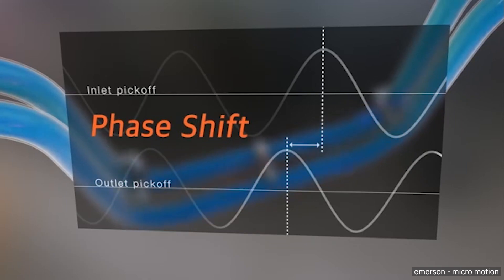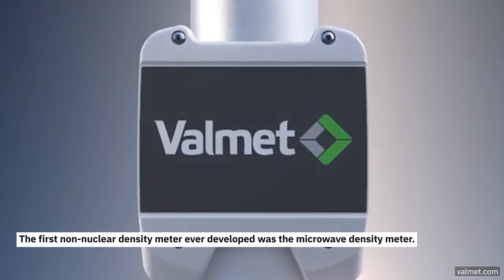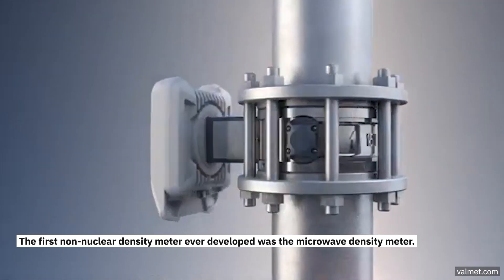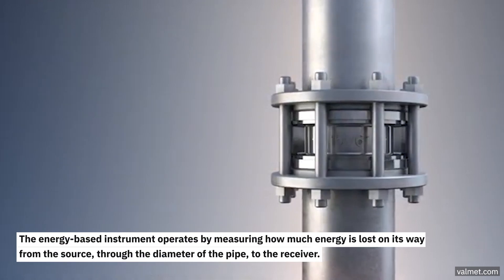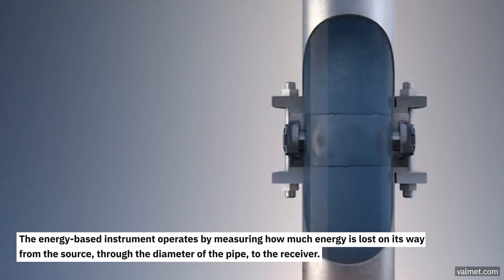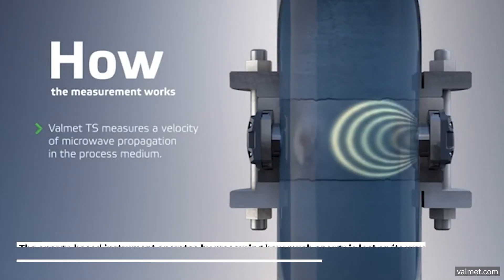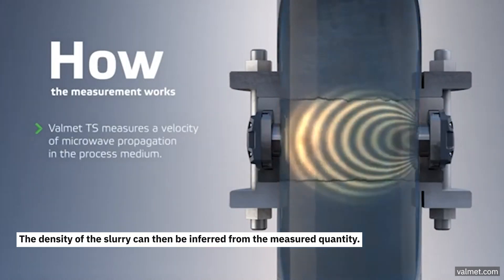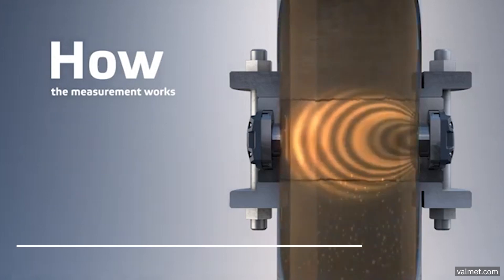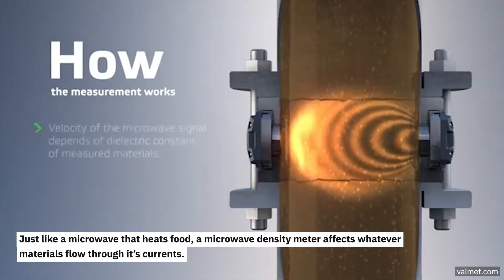The first non-nuclear density meter ever developed was the microwave density meter. The energy-based instrument operates by measuring how much energy is lost on its way from the source through the diameter of pipe to the receiver. The density of the slurry can then be inferred from the measured quantity.